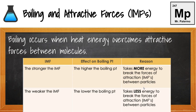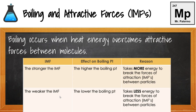Looking at boiling and the intermolecular forces — what is that connection? Boiling occurs when the heat energy overcomes the attractive forces between the molecules. If you have stronger intermolecular forces, it takes more energy to overcome them, so you're going to have a higher boiling point. If you have weaker intermolecular forces of attraction between the particles, it's going to require less energy to break them apart, and therefore a lower boiling point.